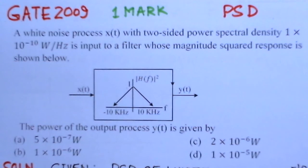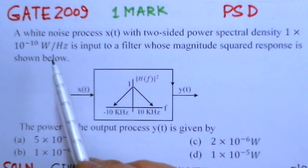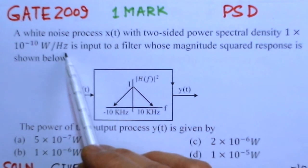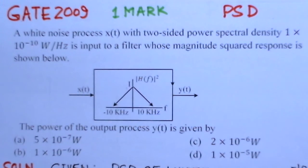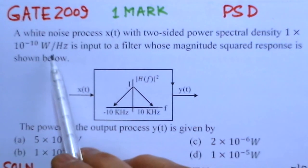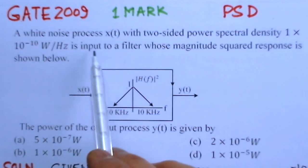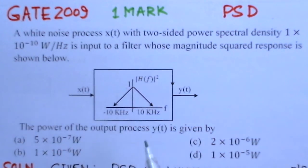What we notice is that two-sided power spectral density is given here in watts per hertz. If you have to find the power or noise power or the output power, it should be multiplied with the bandwidth, because watts per hertz times bandwidth in hertz will give the power in watts.